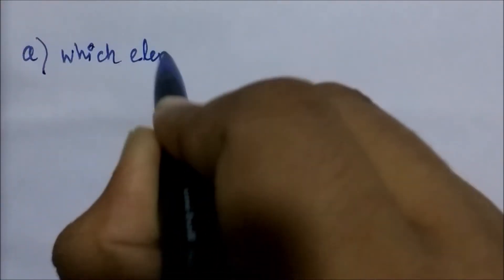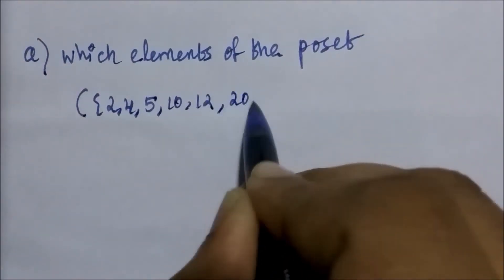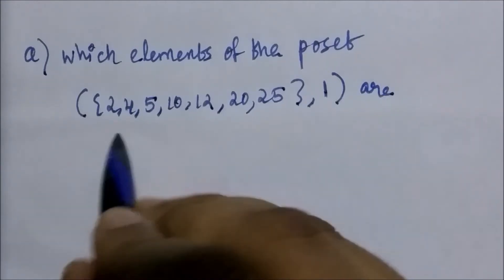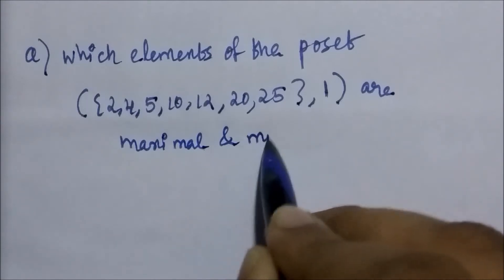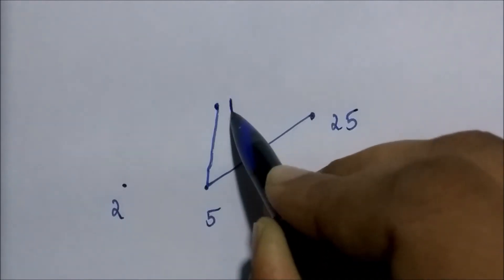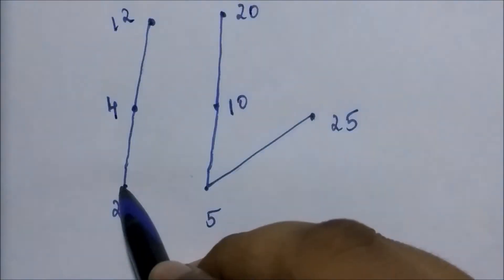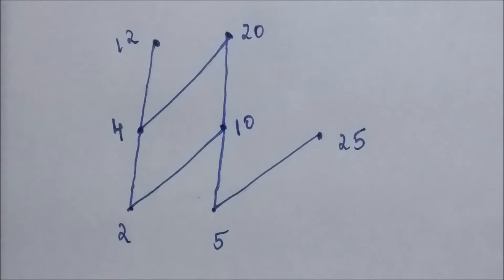Let's see a question. Which elements of the poset are maximal and minimal? The set S is {2, 4, 5, 10, 12, 20, 25} and the relation R is the divides relation. Here is the Hasse diagram representation for this poset.